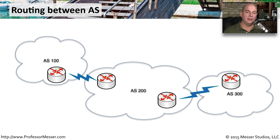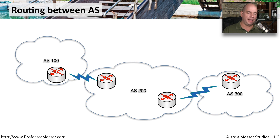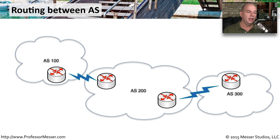Here's a very simplified example of how this works. We have different autonomous systems — these might be different ISPs — and those ISPs have been assigned different AS numbers: AS100, AS200, and AS300. The routing tables in each of these routers is set up to know where these different numbers happen to be. So if we need to route information between one internet service provider and another, we simply send it through that network using BGP routes that take advantage of these autonomous system numbers.